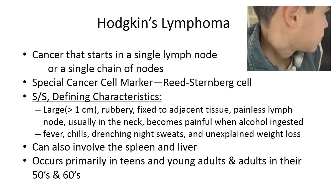Hodgkin's lymphoma starts in a single lymph node or a single chain of lymph nodes. It is characterized by a special cancer cell marker — the Reed-Sternberg cell. A defining feature is a large, rubbery lymph node fixed to adjacent tissue, usually present in the neck, which becomes painful when alcohol is ingested. Hodgkin's lymphoma primarily occurs in teens, young adults, and adults in their 50s and 60s.